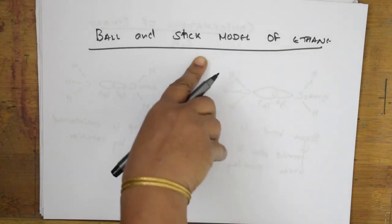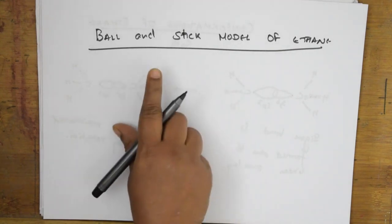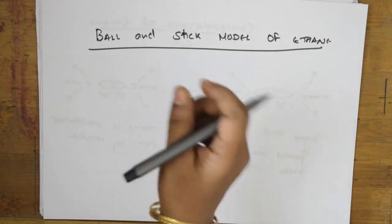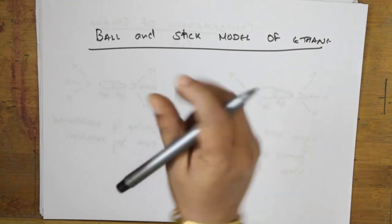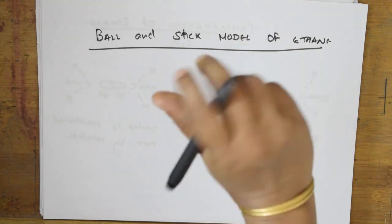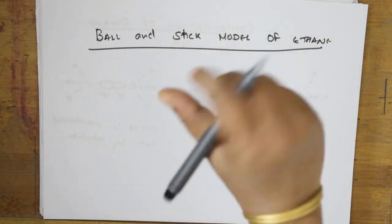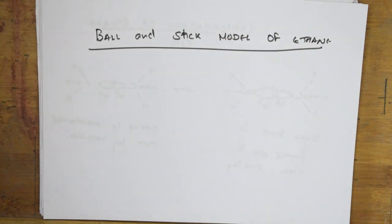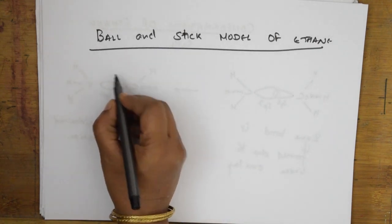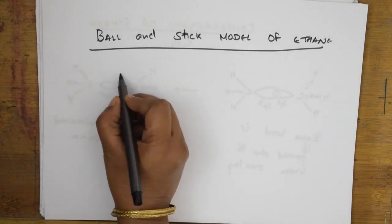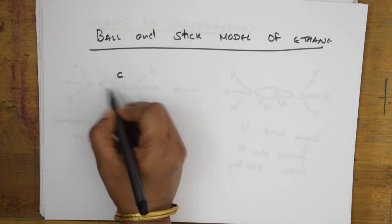Now for conformers of butane — a 4-carbon alkane. I will show Newman projections. The first conformation: front carbon has CH3, H, H and rare carbon has CH3, H, H — this is the fully eclipsed form. Rotation is between C2 and C3.